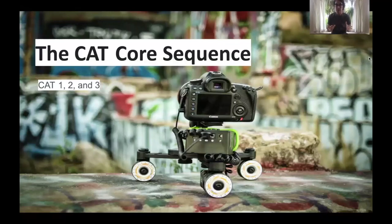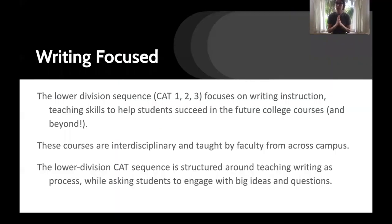Thank you. Super fast overview about the CAT course sequence, which is CAT 1, 2, and 3. The course sequence is writing focused, because CAT, after all, is a writing class, or set of writing classes.